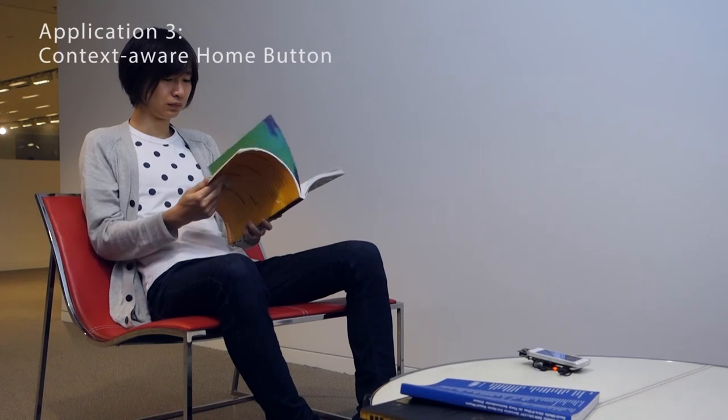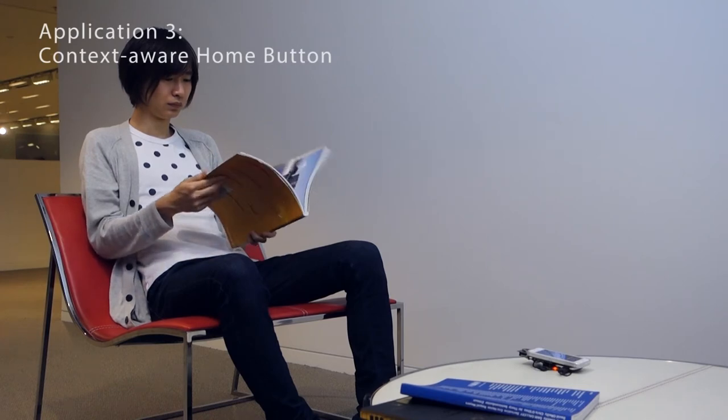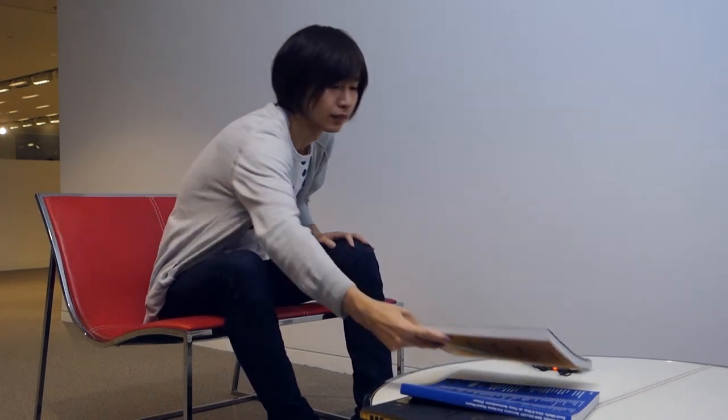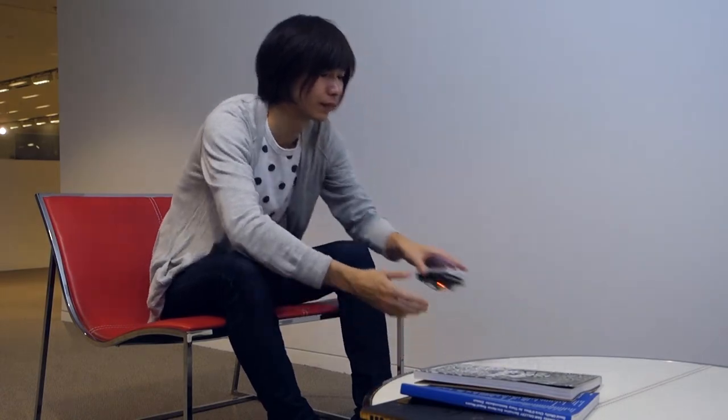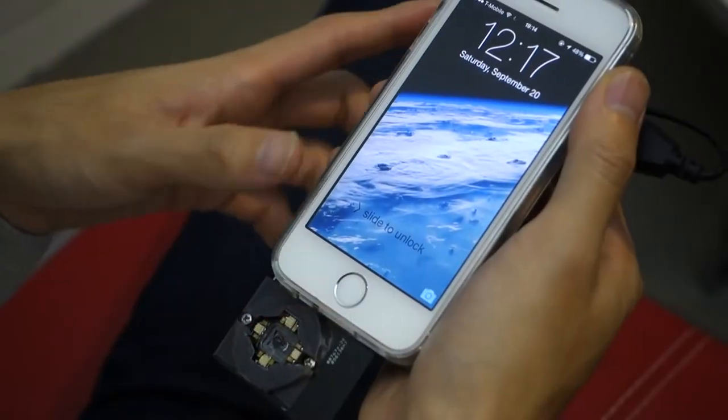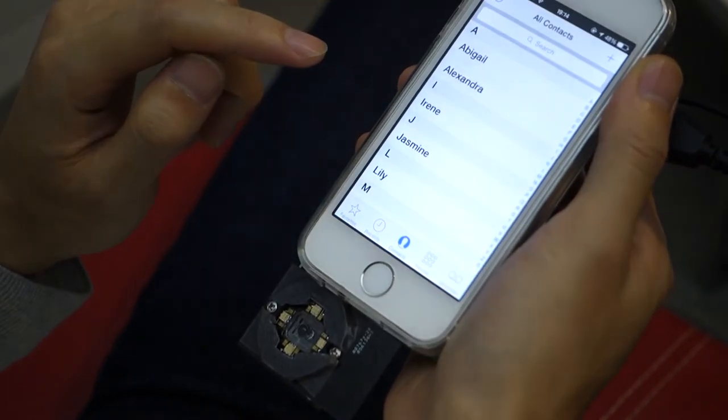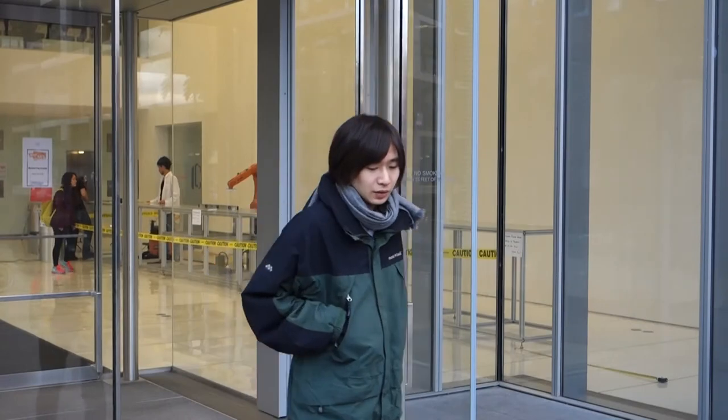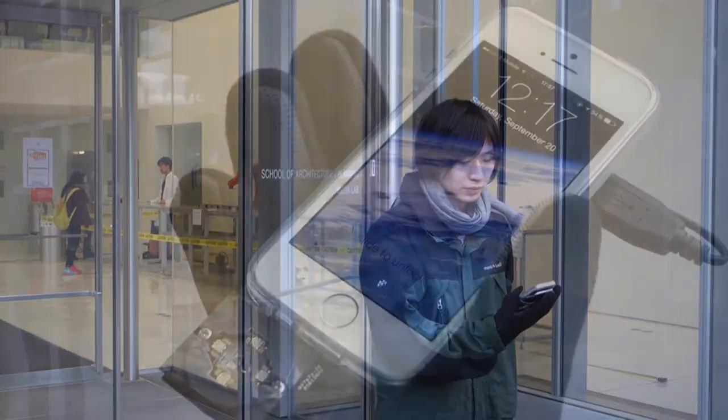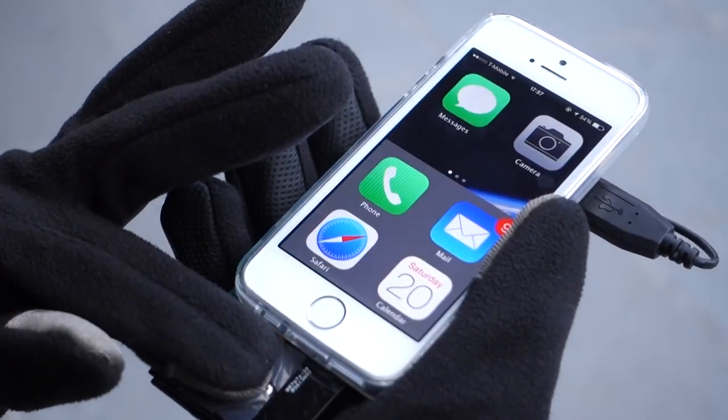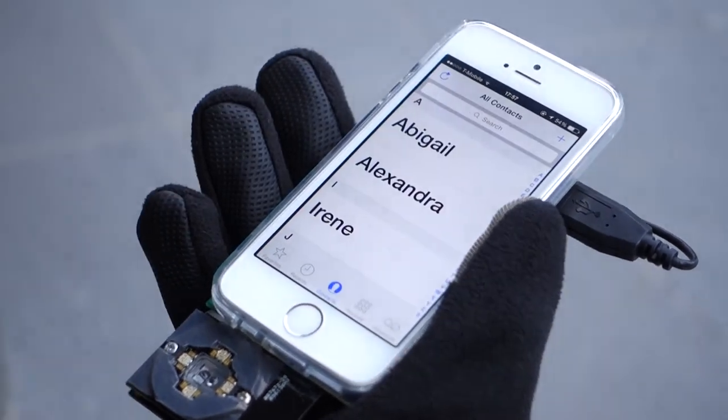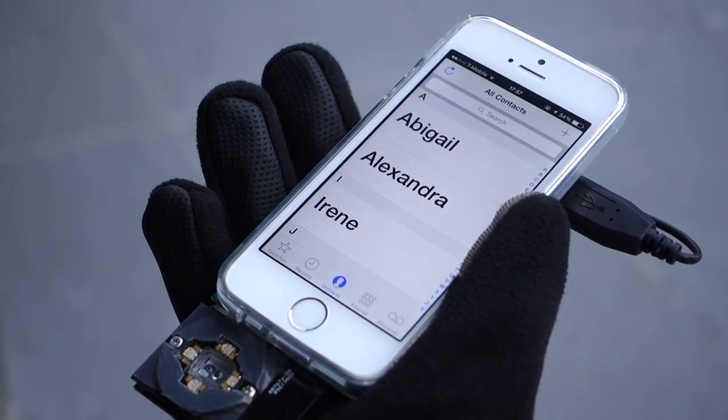By embedding SPECTRANS sensor in a smartphone, we can create a Smart Home button that changes behavior based on the user context. When a user is controlling a phone with bare hands, it shows a normal home screen and address book. However, when a user is wearing a glove, a set of large icons that are used more frequently will show up for easier navigation. All these user contexts are detected by the material sensor automatically.